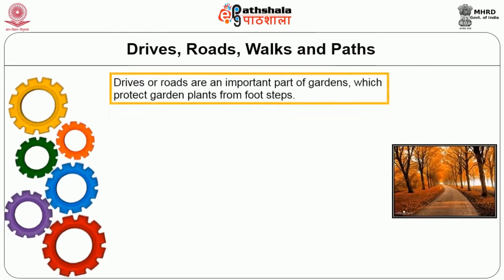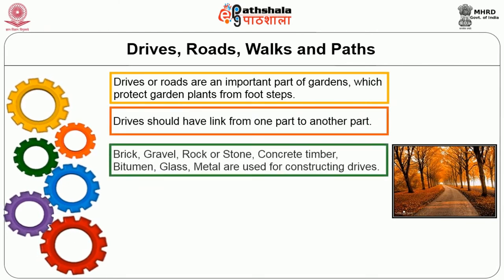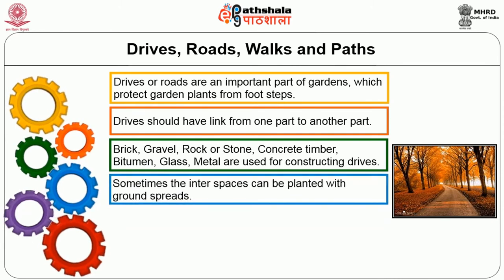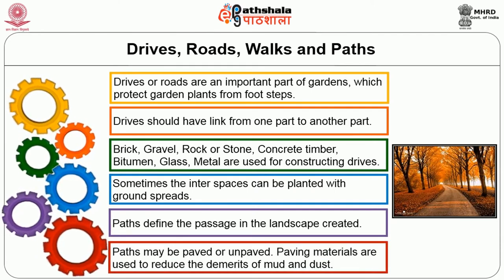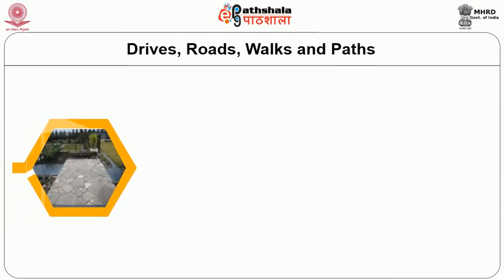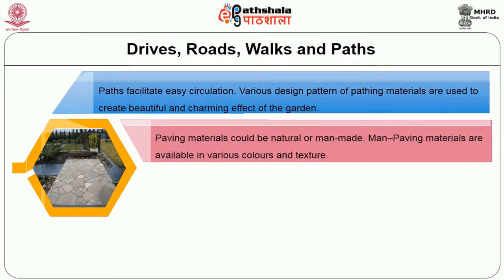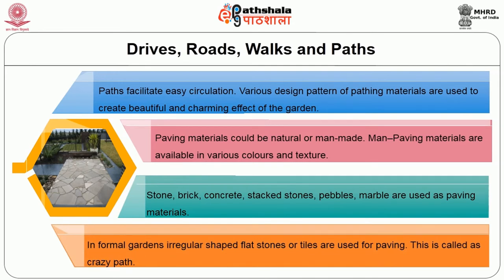We will see about drives, roads, walks and paths. Drives or roads are an important part of the garden which protect garden plants from footpaths. Drives should link one part to another. Brick, gravel, rock, stone, concrete, timber, bitumen, glass, metal are used for constructing drives. Sometimes the interspace can be planted with ground cover. Path defines the passage in the landscape. Paths may be paved or unpaved. Paving materials are used to reduce the issues of mud and dust. Various designs and patterns of paving materials are used to create a beautiful and charming effect. Paving materials could be natural or man-made — stone, brick, concrete, stacked stones, pebbles, marbles are used. In formal gardens, irregular-shaped flat stones or tiles are used for paving, called crazy paving.